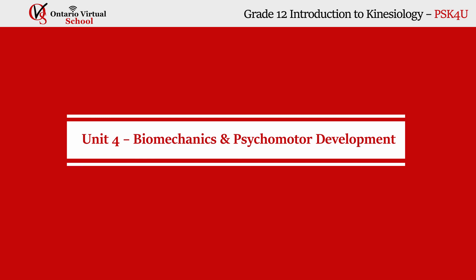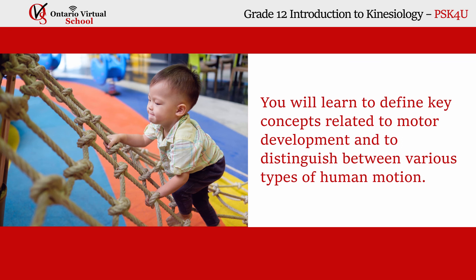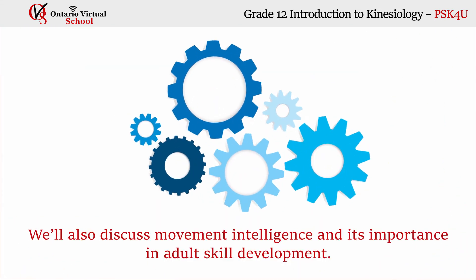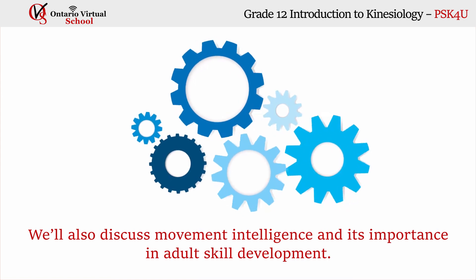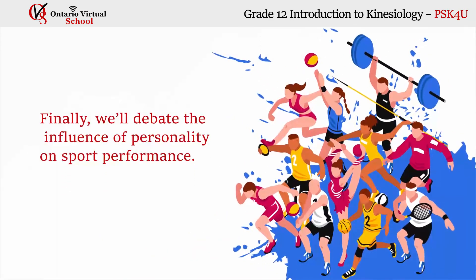Unit 4 – Biomechanics and Psychomotor Development. How do babies develop the motor skills we ultimately possess as adults? In this unit, you will learn to define key concepts related to motor development and to distinguish between various types of human motion. We'll also discuss movement intelligence and its importance in adult skill development. Finally, we'll debate the influence of personality on sport performance.